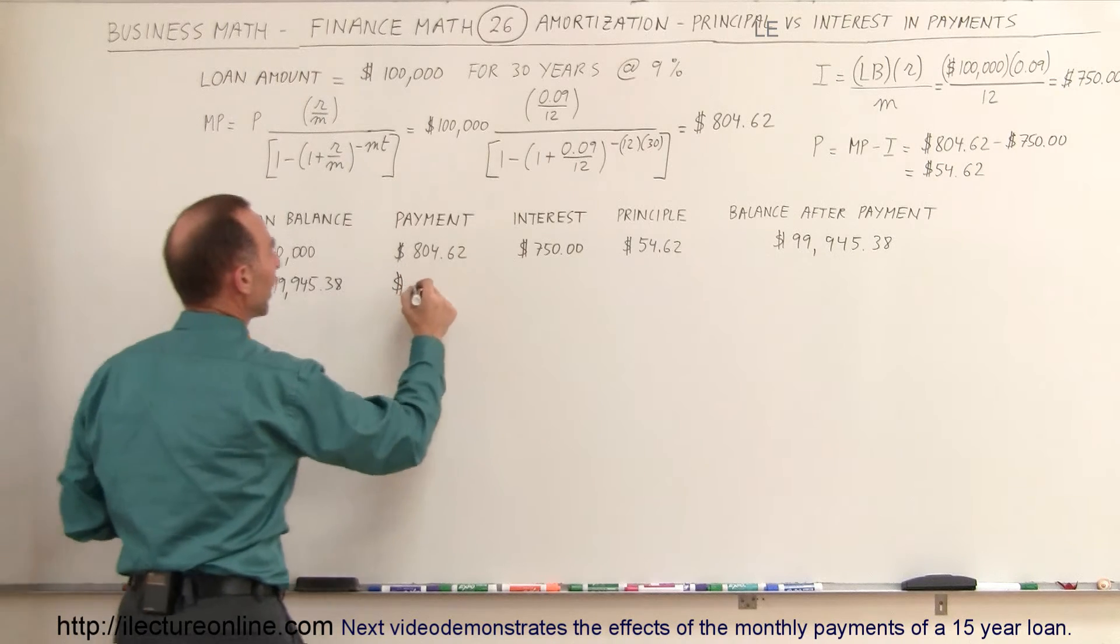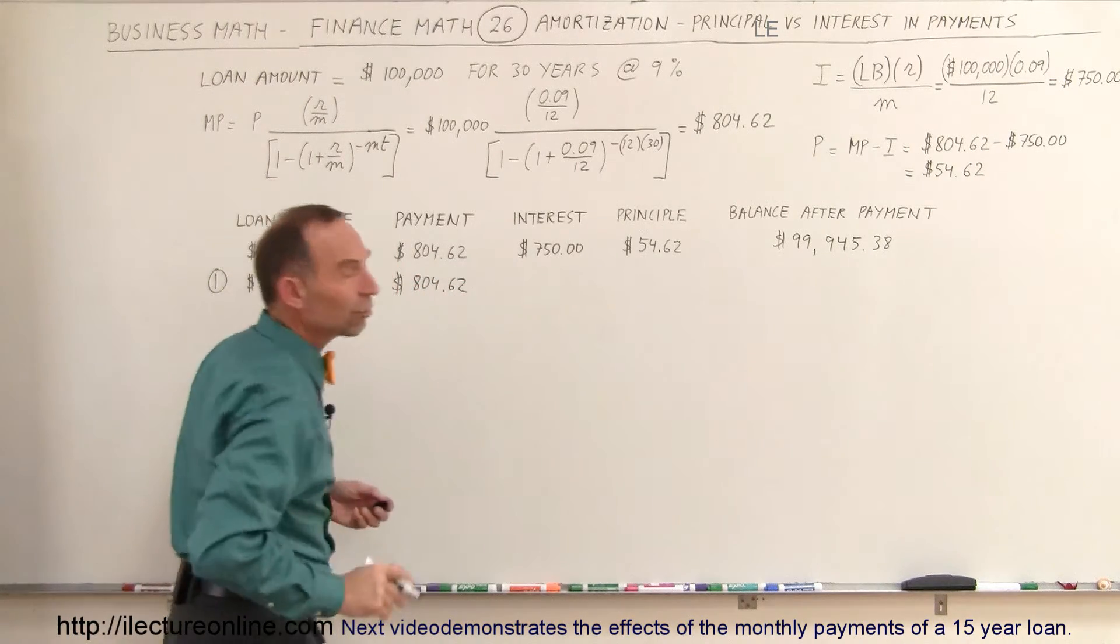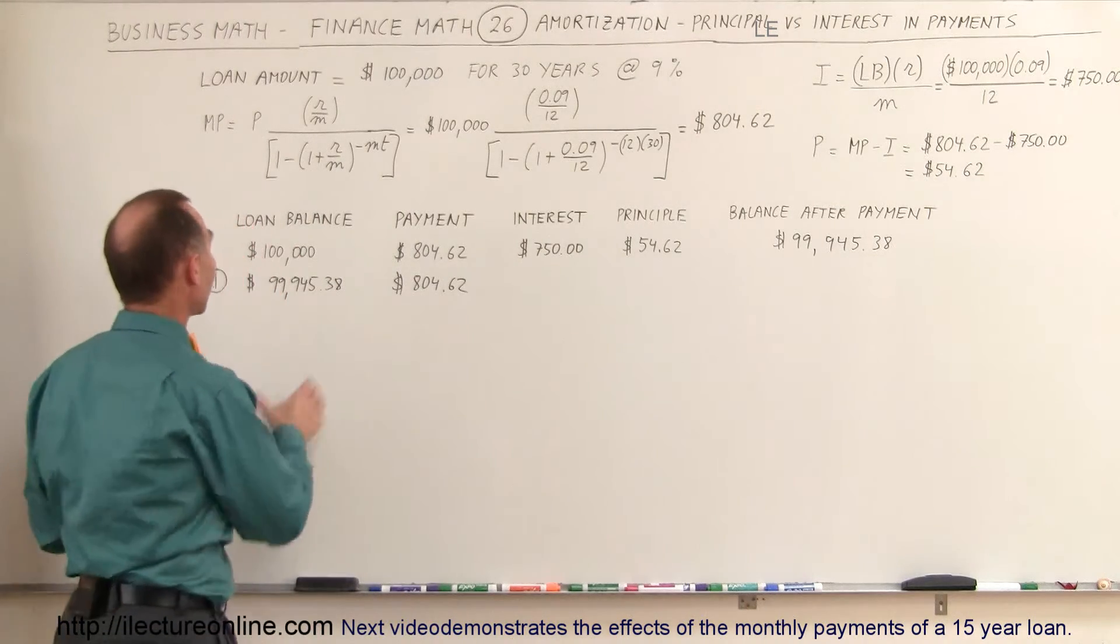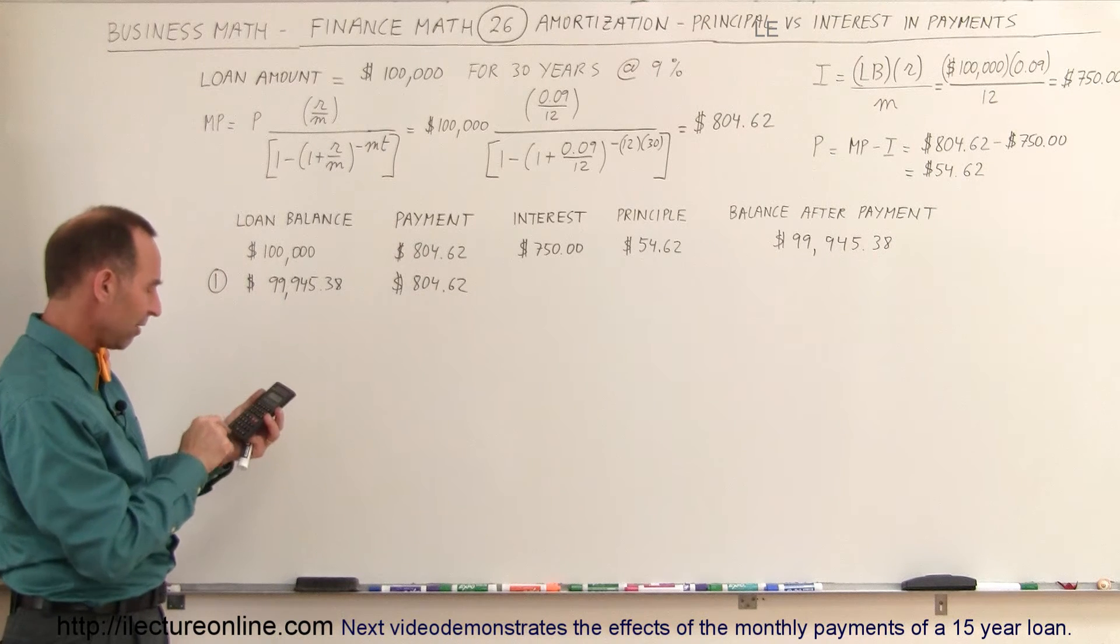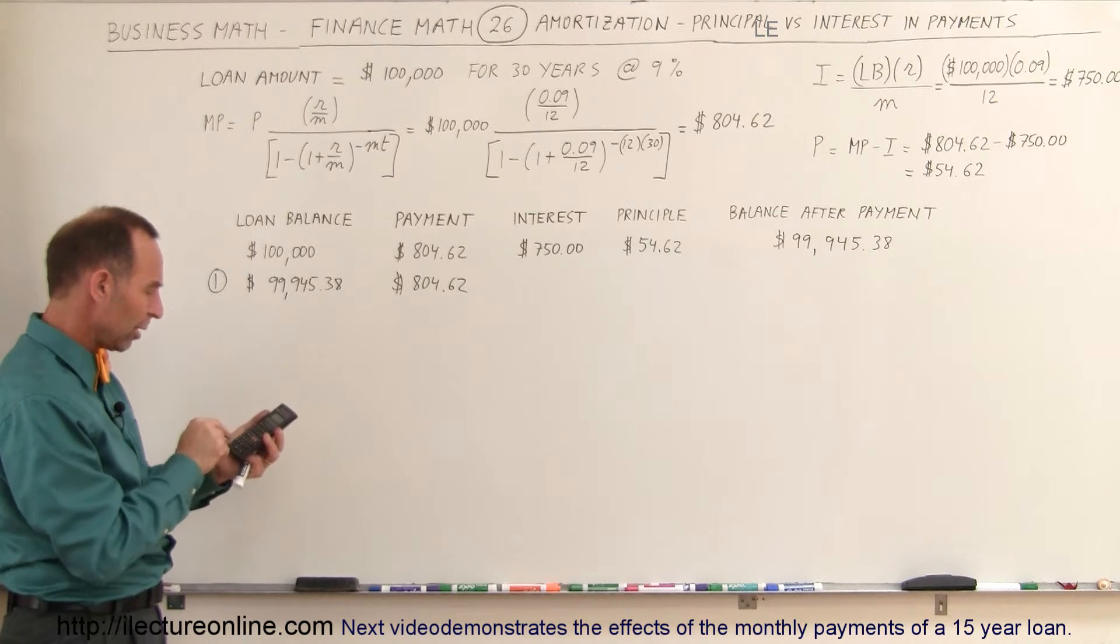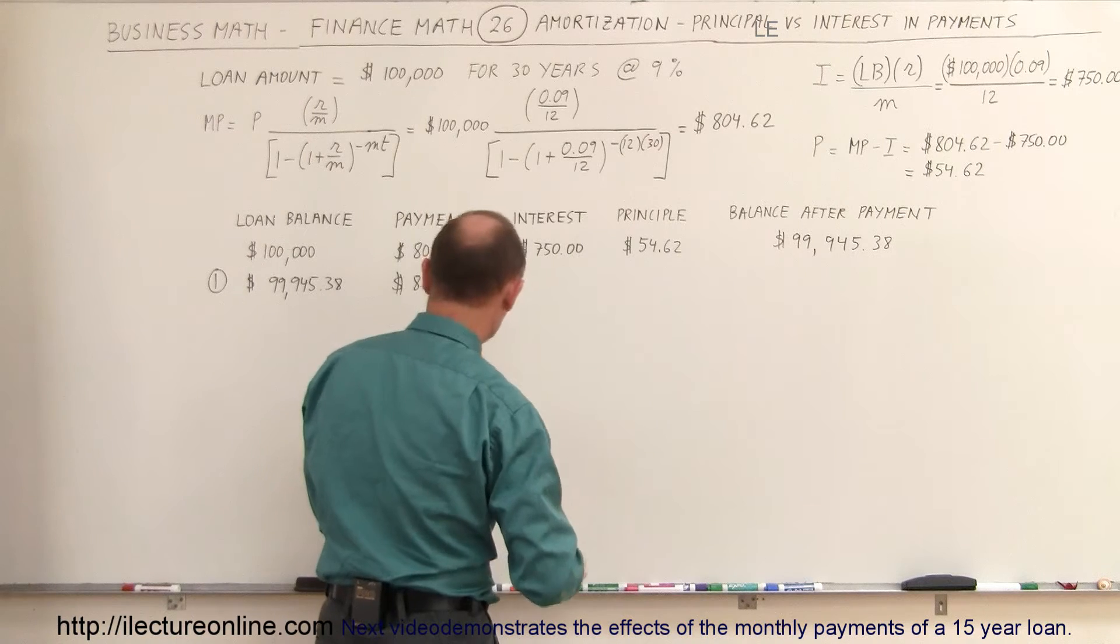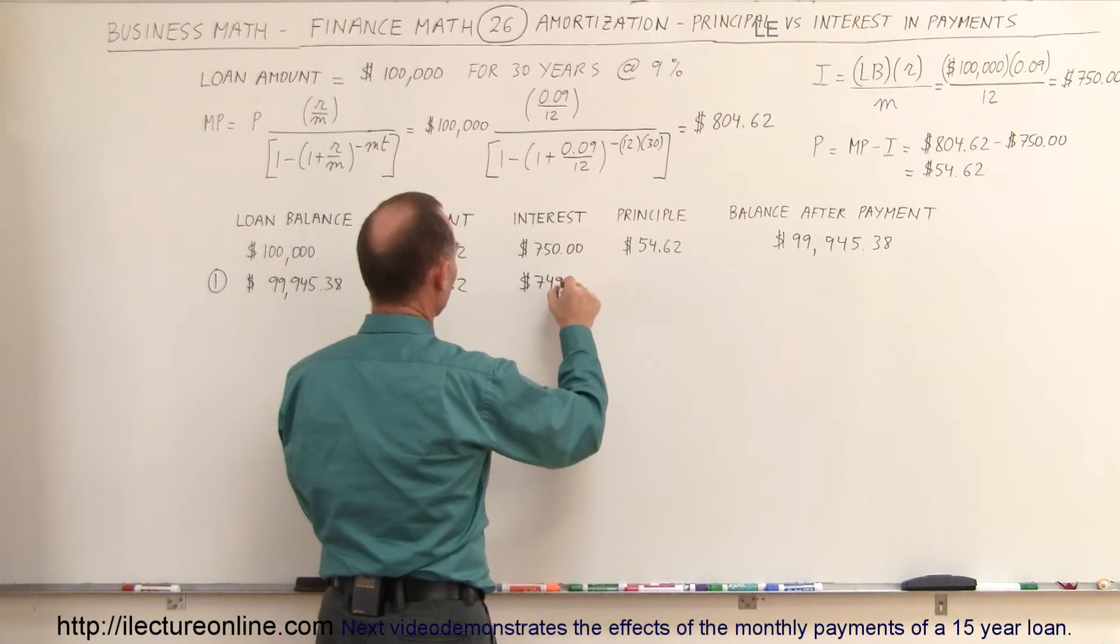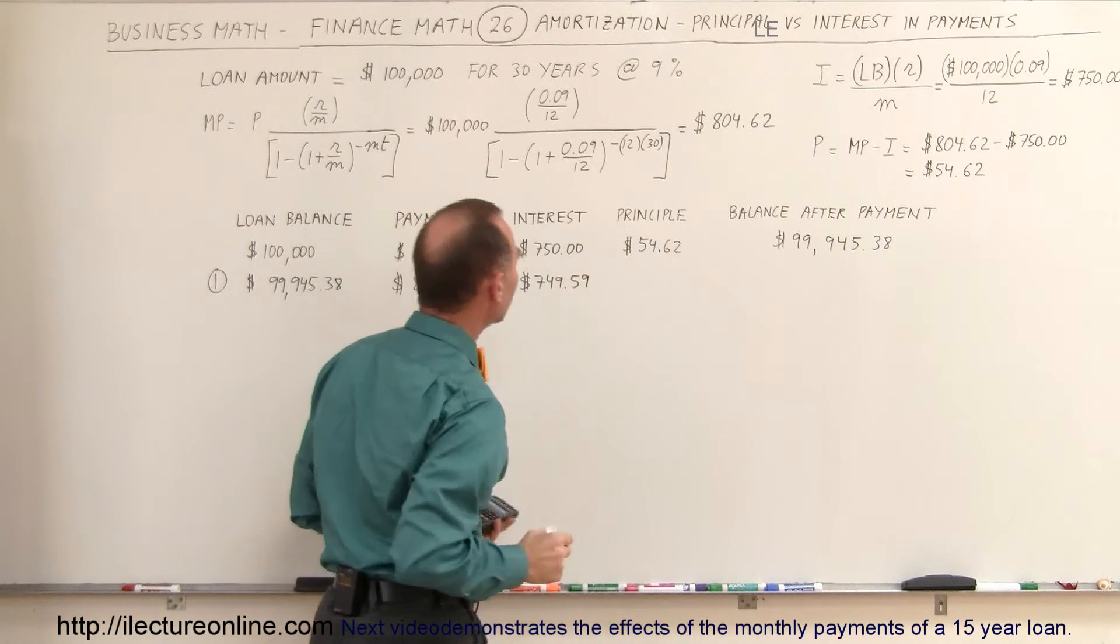Again, the next month you'll make another payment of $804.62. So what is the interest payment now? The interest payment will be the 9% times this amount divided by 12. So we have $99,945.38 times 0.09 divided by 12. And so now, of that amount, not $750, but $749.59 will go to interest.